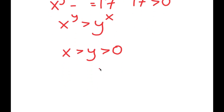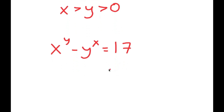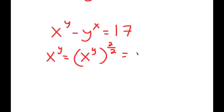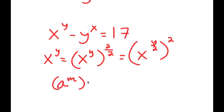Now that we know this, I'm going to rewrite my equation: x to the power of y minus y to the power of x is equal to 17. I can rewrite x to the power of y as x to the power of y over 2, to the power of 2, because 2 over 2 equals 1. Using the rule that a to the power of m to the power of n equals a to the power of m times n, I can switch these up.